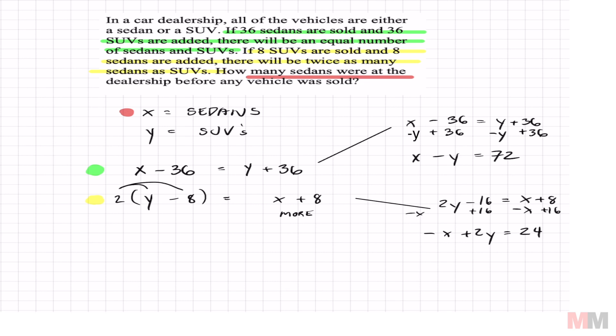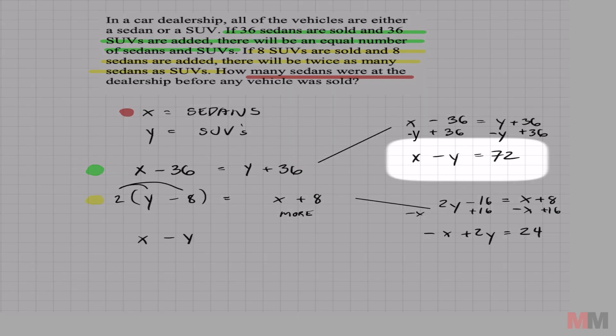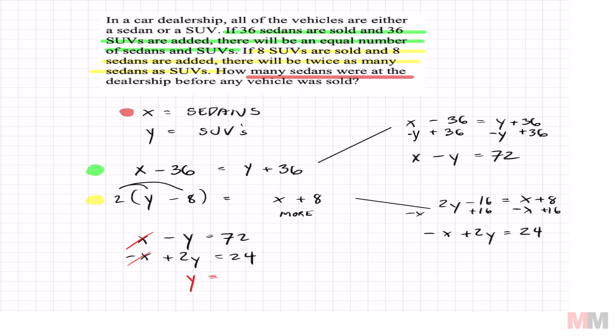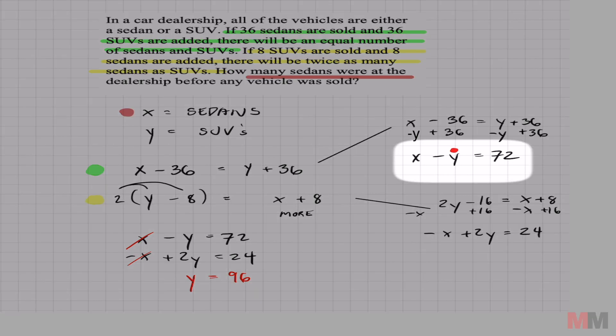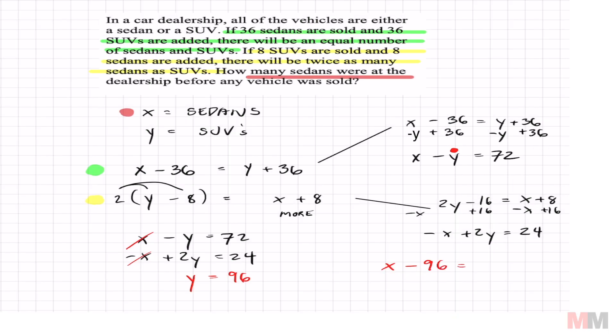And from here, it's just a system of equations. x minus y equals 72. And the other one in standard form is negative x plus 2y equals 24. You don't even need to multiply because these are going to cancel off. I'm left with y equals 96. But I'm not trying to figure out how many SUVs there are. I'm trying to figure out the sedans. So from here, we can substitute it anywhere. We can even substitute it to this y right here. And I'm going to do that x minus 96 equals 72. Add 96. And you get your number of sedans. x equals 168.